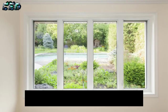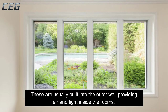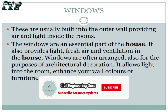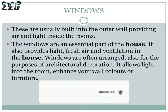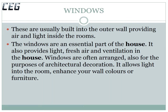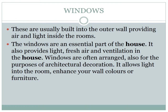Windows: These are usually built into the outer wall, providing air and light inside the rooms. Windows are an essential part of the house, providing light, fresh air, and ventilation. Windows are often arranged for the purposes of architectural decoration, allowing light into the room and enhancing wall colors or furniture.